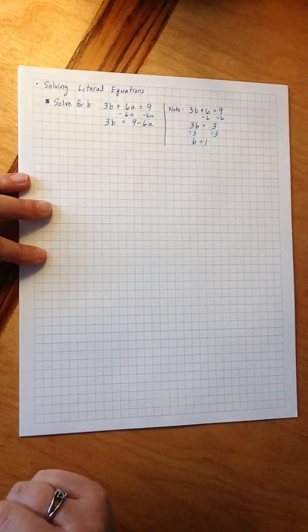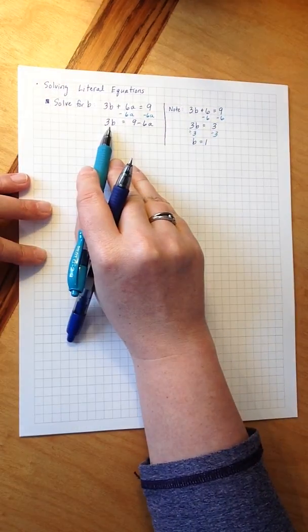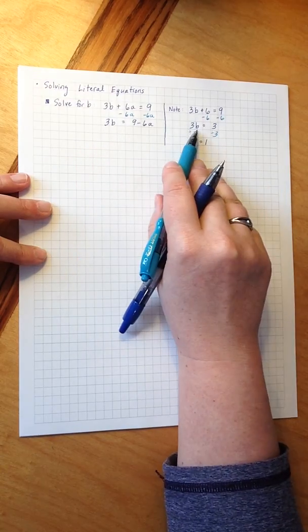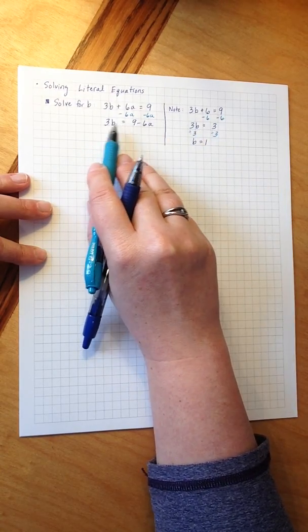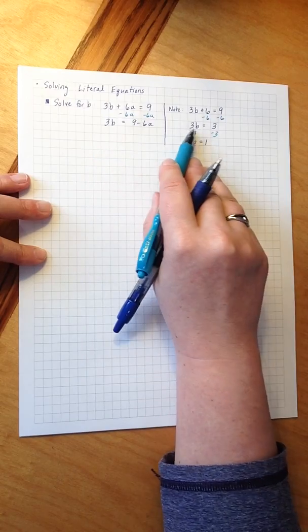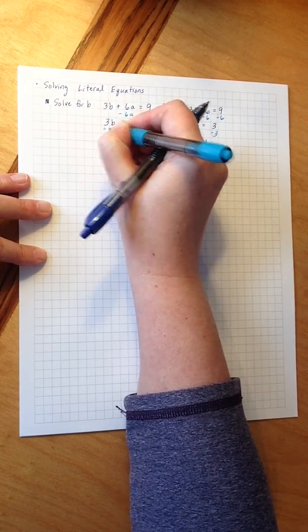In the equation we're trying to solve, I have that same variable, I'm still trying to solve for b. I have the same operation happening, 3 times b, so I'm going to divide by 3.